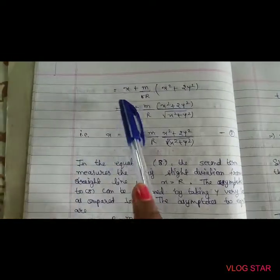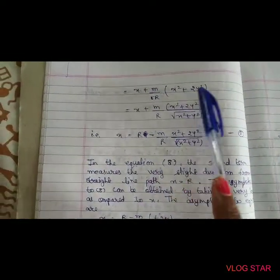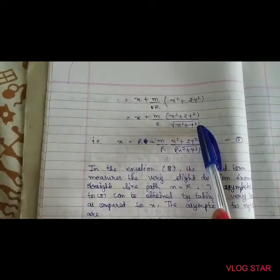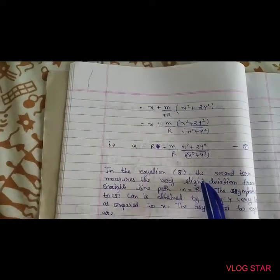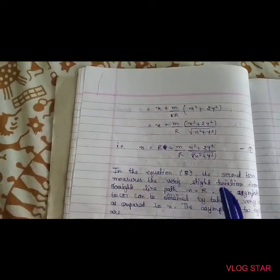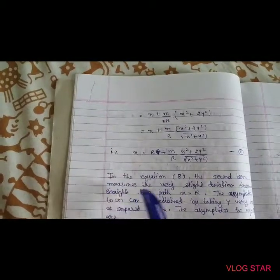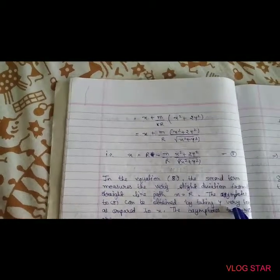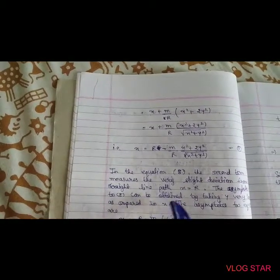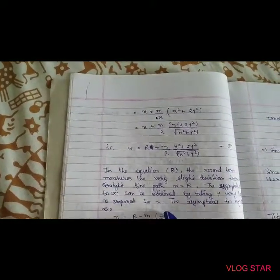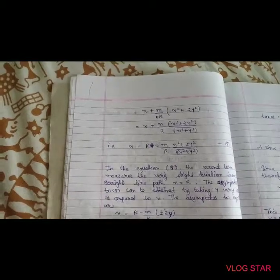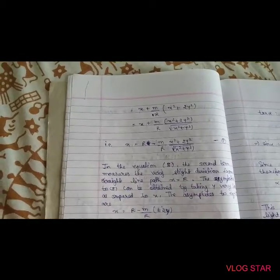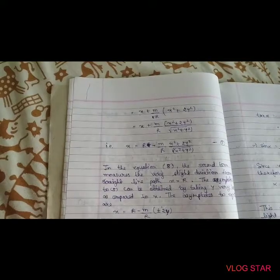Setting x = R + S and changing variables, we get x = R − m/R + R. The second term measures the very slight deviation from the straight line. The asymptotes to the curve can be obtained by taking y very large compared to x. The asymptotes to equation 8 are: x = R + 2m·y/R and x = R − 2m/R·y.